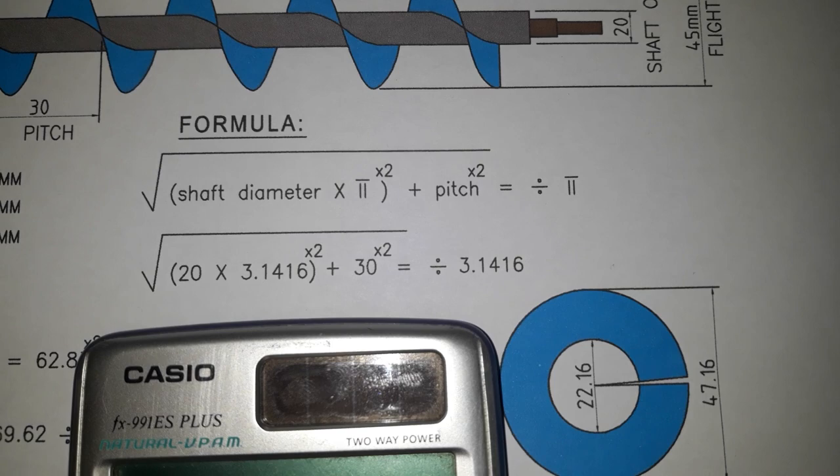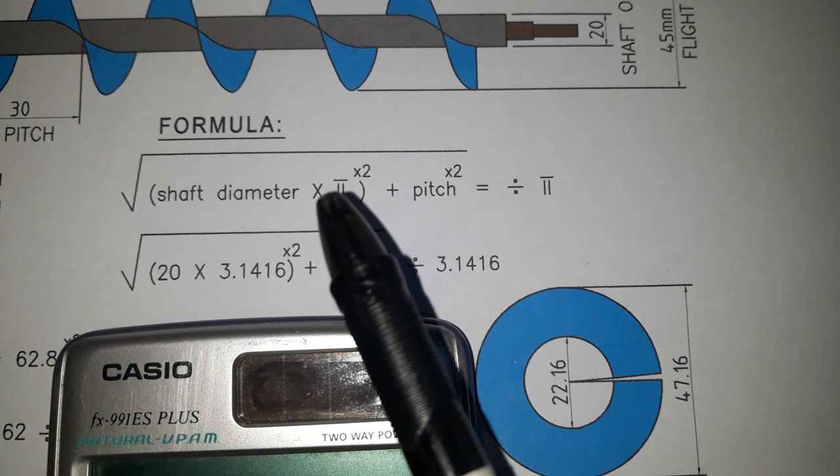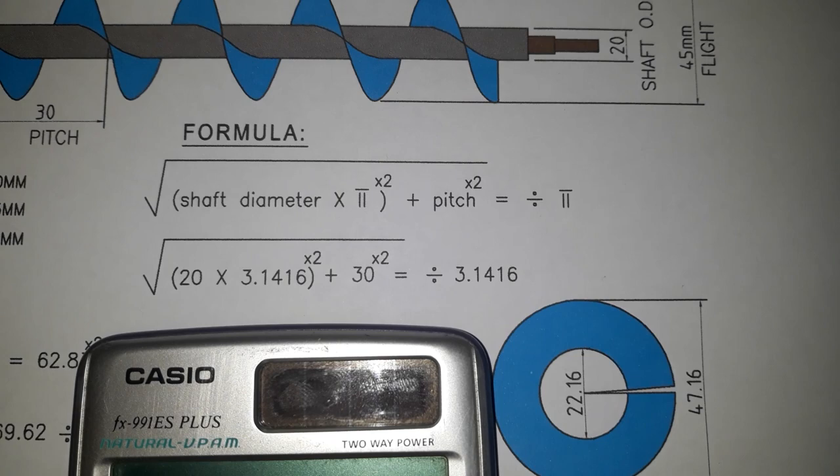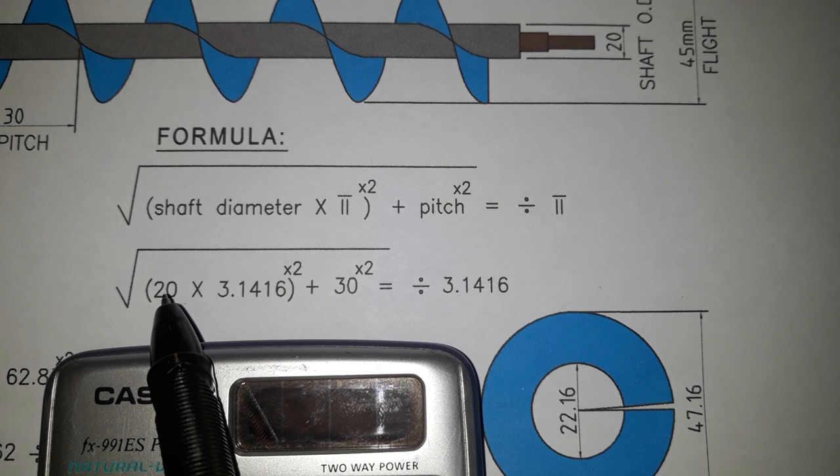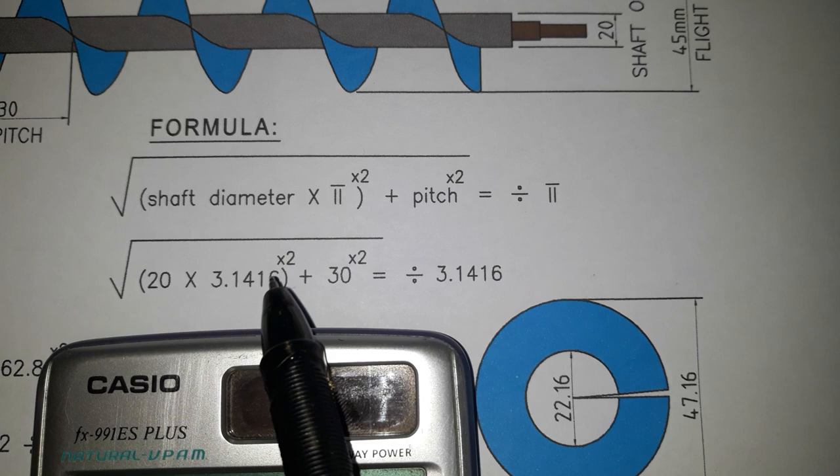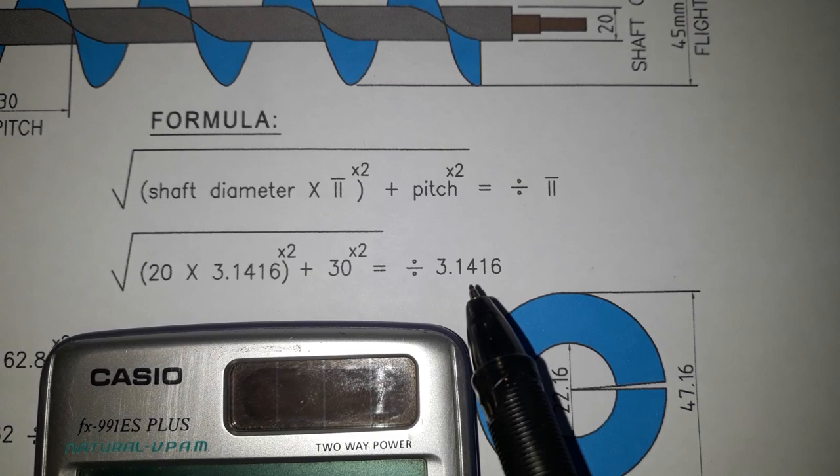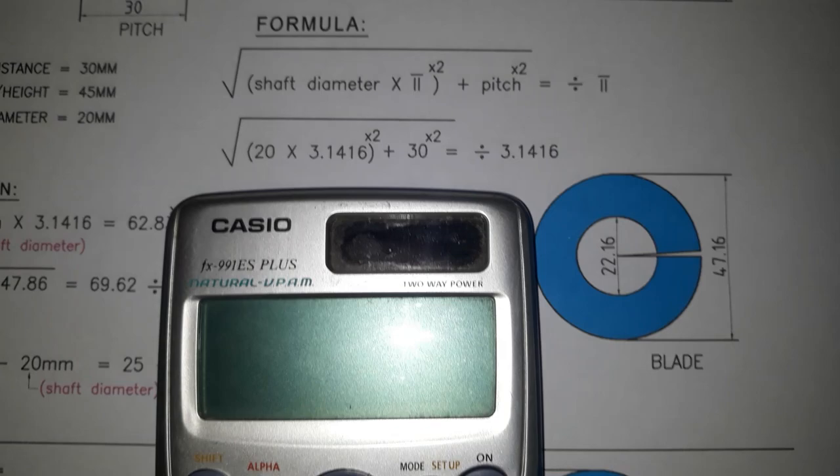This is the formula: square root of shaft diameter multiplied by pi, squared, plus pitch squared, equals, divided by pi. Here down below is the substitution. So 20, the shaft diameter, multiplied by pi or 3.1416, then squared, plus 30 the pitch squared, equals, then divided by 3.1416. So let's calculate.